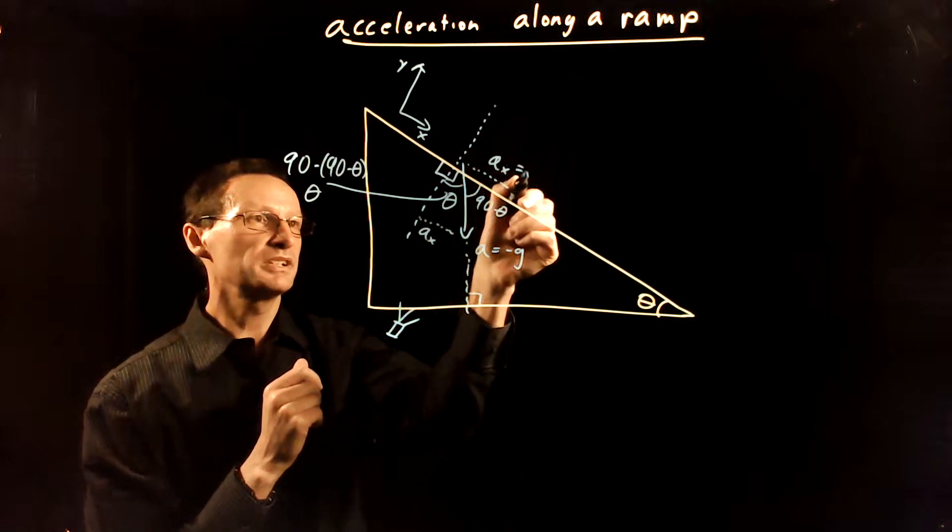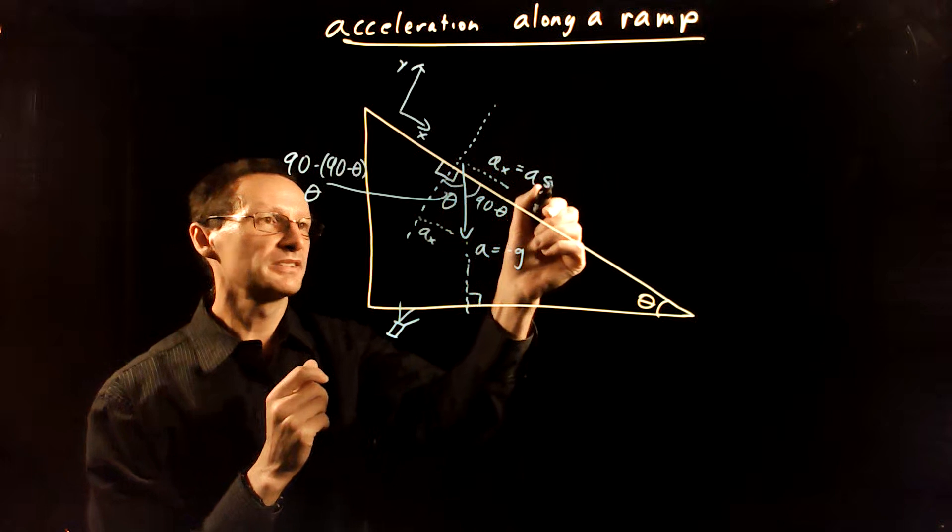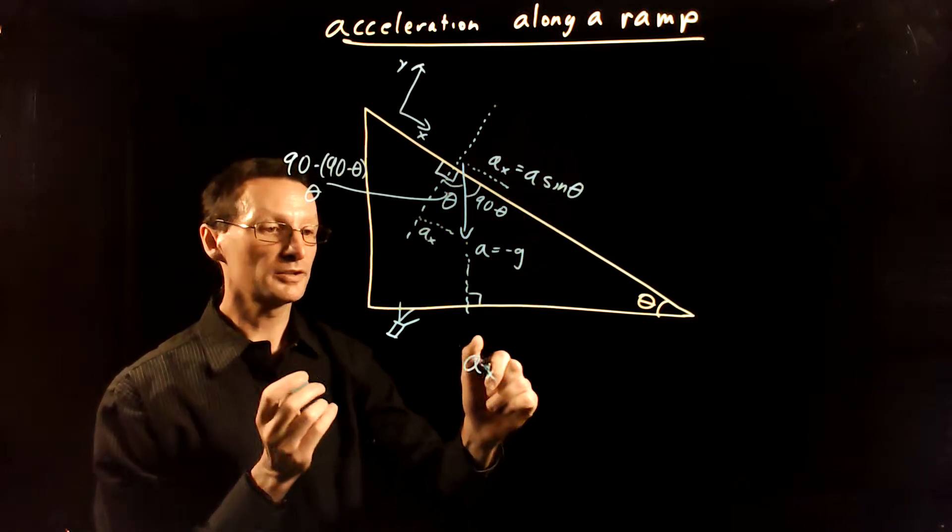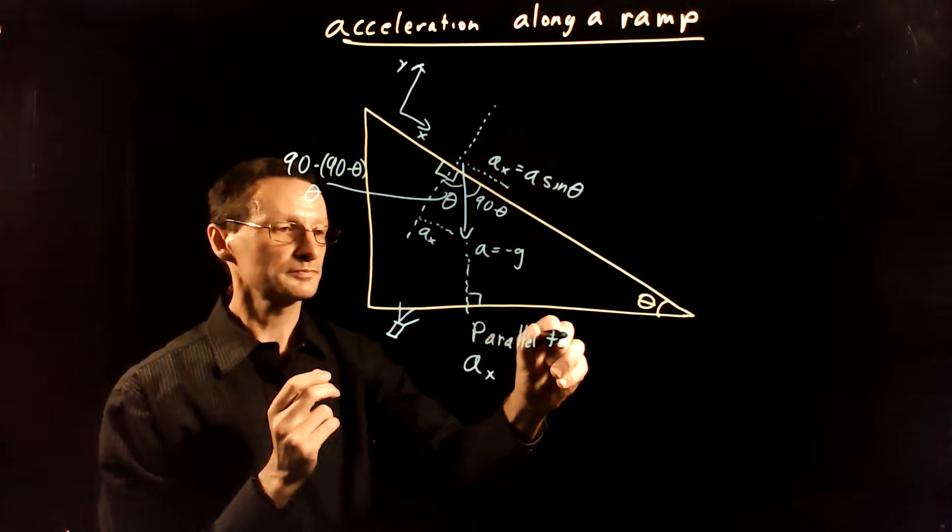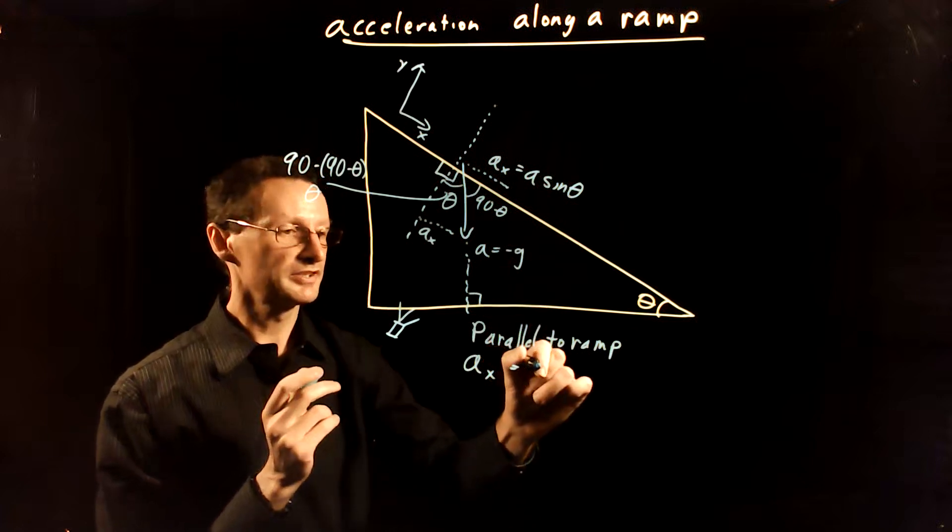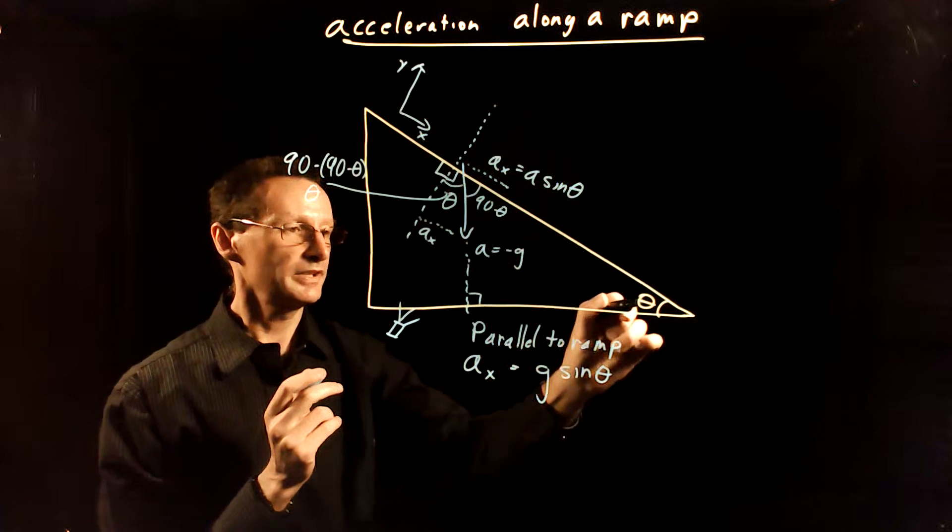So that's going to be the total hypotenuse which is A times sine of theta. So the acceleration along the ramp, parallel to the ramp, is going to be the magnitude of the acceleration which is g times the sine of the angle here which is theta.